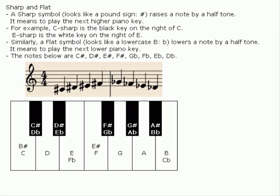Sharp and flat. A sharp symbol looks like a pound sign or number sign, and raises a note by a halftone. It means to play the next higher piano key. For example, C sharp is the black key on the right of C, and E sharp is the white key on the right of E.